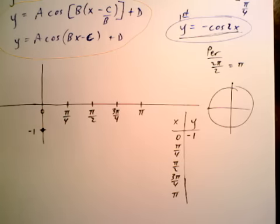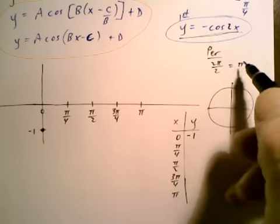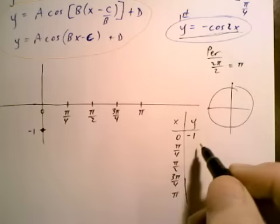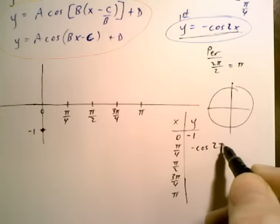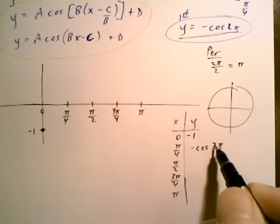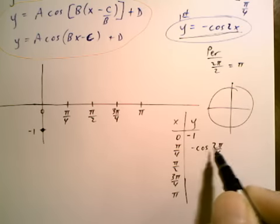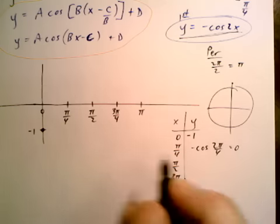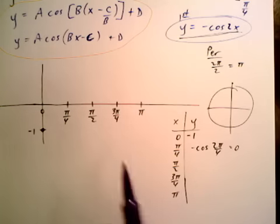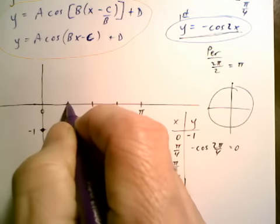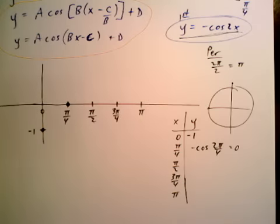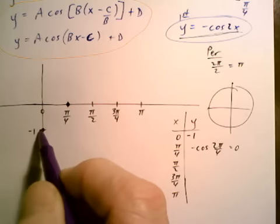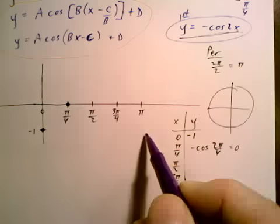When we replace x with π over 4, we get negative cosine of 2π over 4. Well, we know that 2π over 4 is π over 2, and we know cosine of π over 2 is 0. So we get 0. So we get π over 4, 0, and that would be that point right there. Well, we should already know what this is going to do. It's going to come up. It's going to go down, and it's going to come back over here.